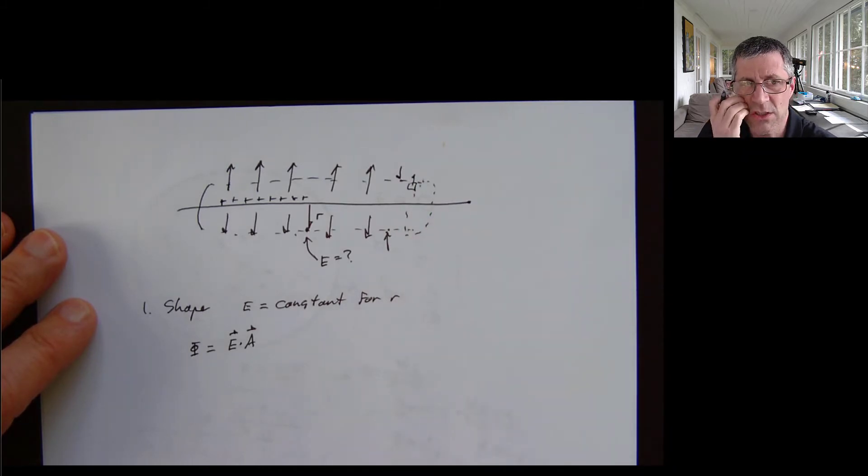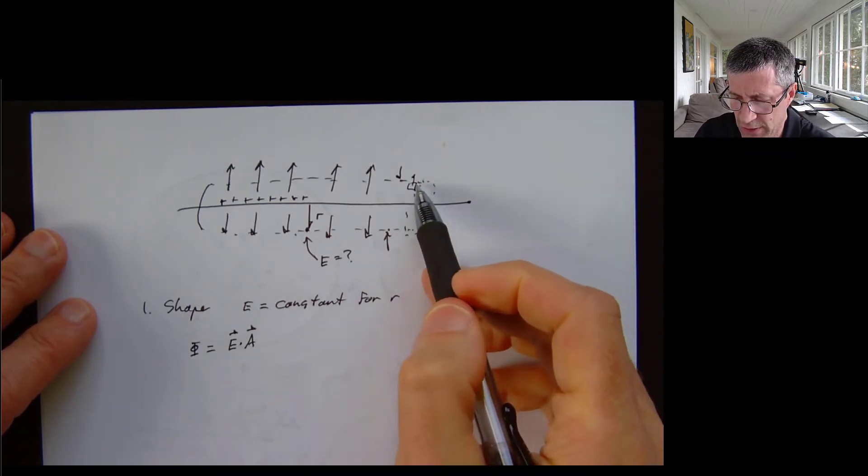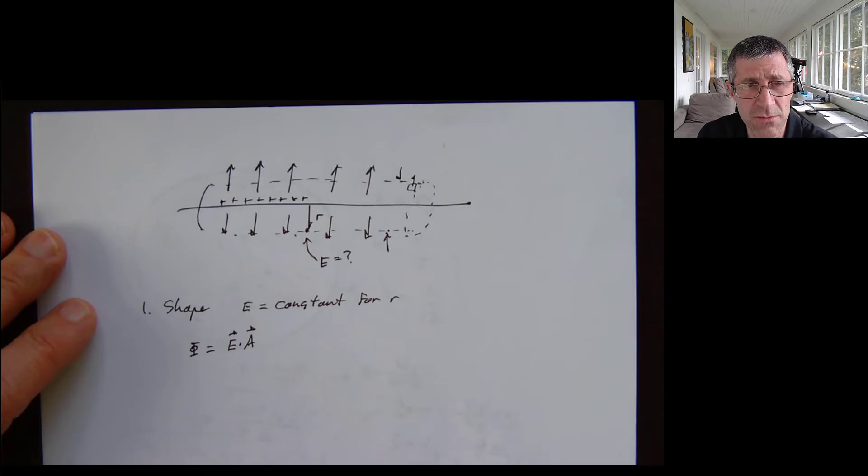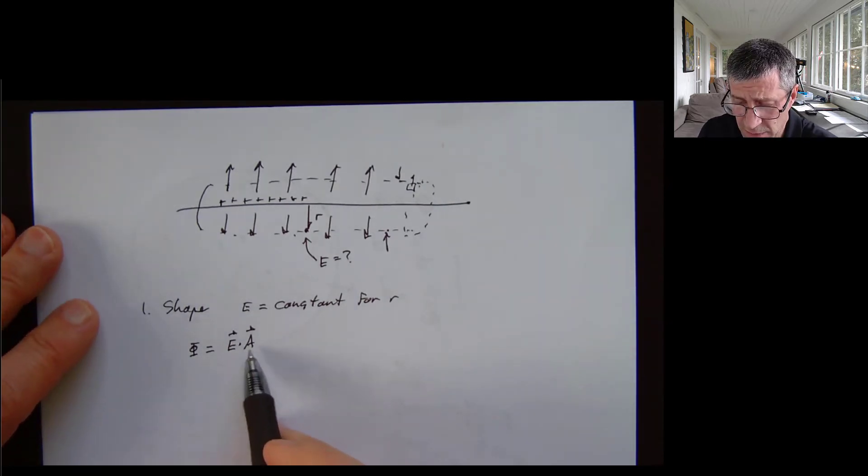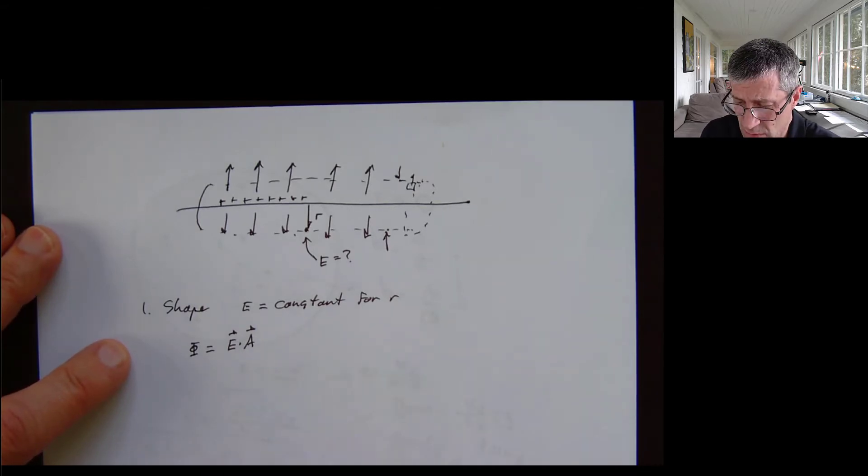So if I have a little surface area here, that's going to have a vector direction. And that vector direction is lined up with my electrical field lines. So it's in the same direction. So the dot product. So my electrical field times the magnitude of my electric field times the area it passes through.